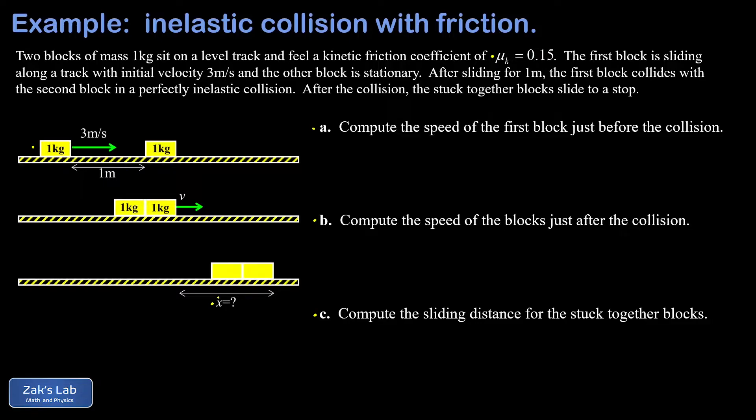So to get started with part A, we want the speed of that initially moving block after it slides one meter. We've got to get the acceleration of it to get that done. That means we need to figure out the size of the friction force on it. So we're going to pop in all the vectors for a force analysis. And there are three forces acting on this block.